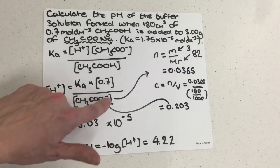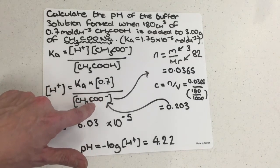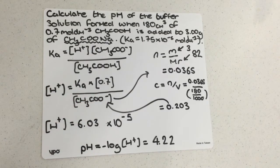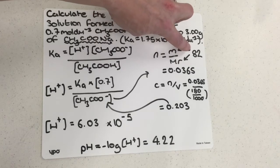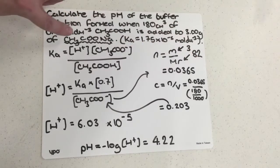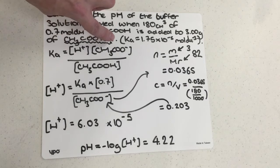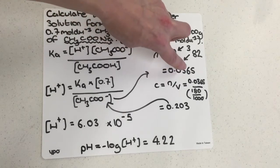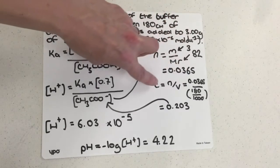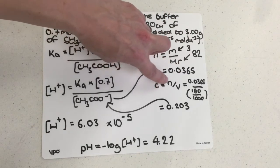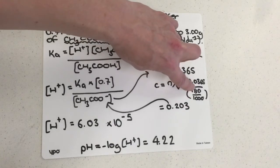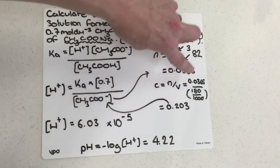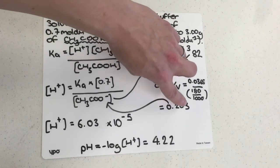For the CH3COO⁻ concentration, I haven't calculated this straight away. Since I was given a mass, whenever I see a mass in an exam question I instinctively think moles equals mass over Mr. Over here on the right hand side I've got 3 grams divided by 82 — the 82 is the molar mass of CH3COONa — giving me 0.0365 moles. This mole value is then used to calculate a concentration by dividing by the volume it's dissolved in: 180 centimetres cubed of the weak acid, giving a concentration of 0.203.